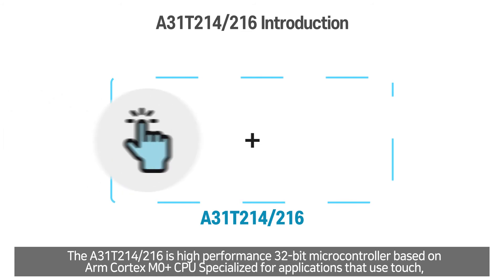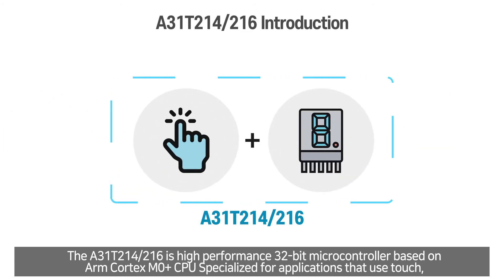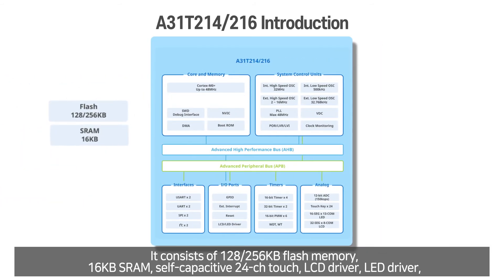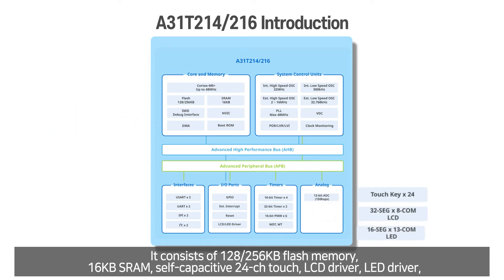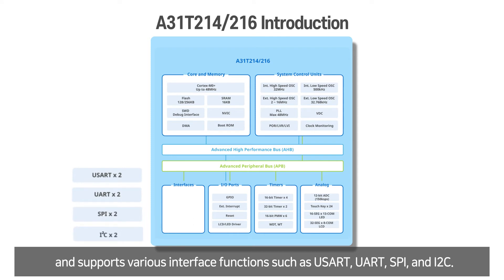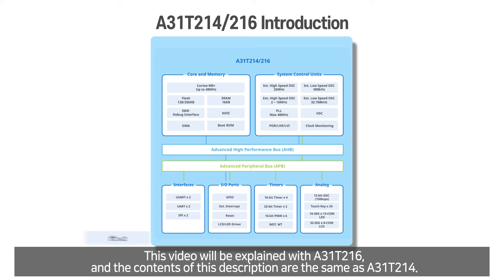The A31T216 is a high-performance 32-bit microcontroller based on an ARM Cortex-M0 Plus CPU, specialized for applications that use touch, LCD, and LED display at the same time. It consists of 128–256 KB flash memory, 16 KB SRAM, self-capacitive 24-channel touch, LCD driver, LED driver, and supports various interface functions such as USART, UART, SPI, and I2C. This video is explained with A31T216 and the contents are the same as A31T214.